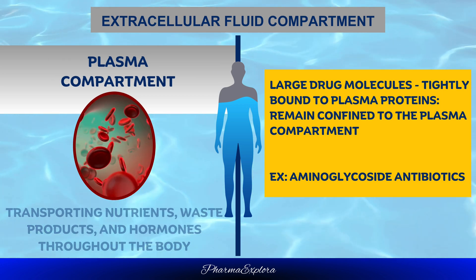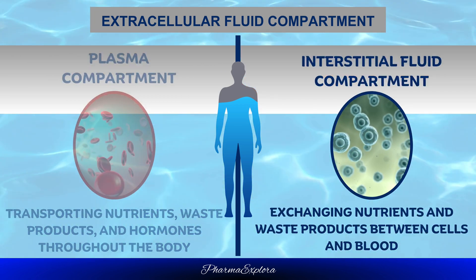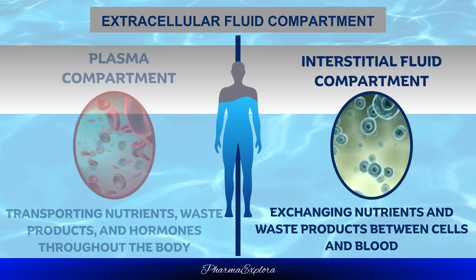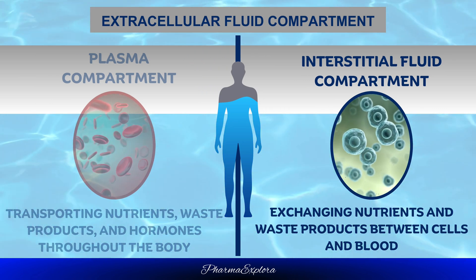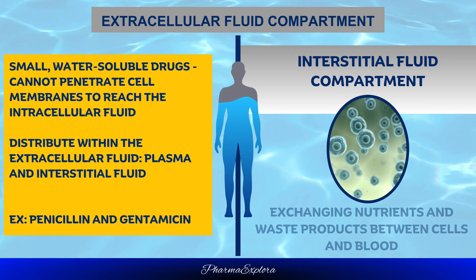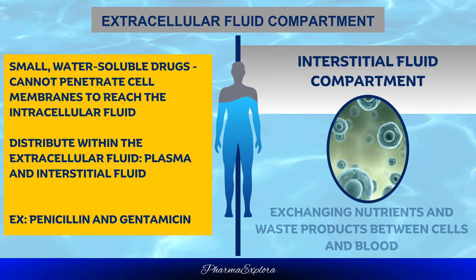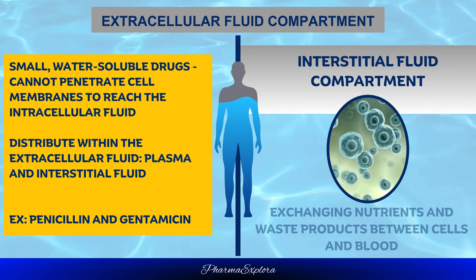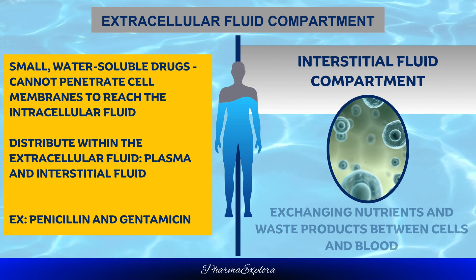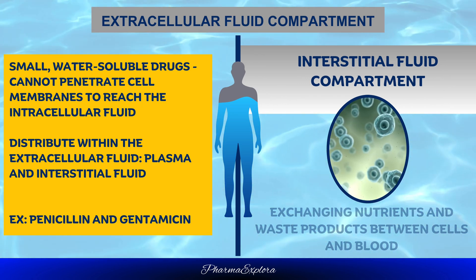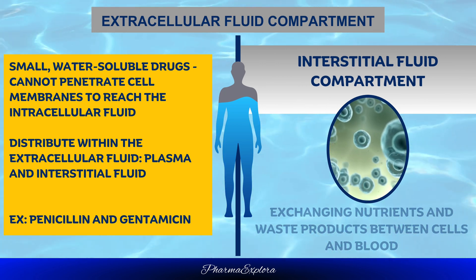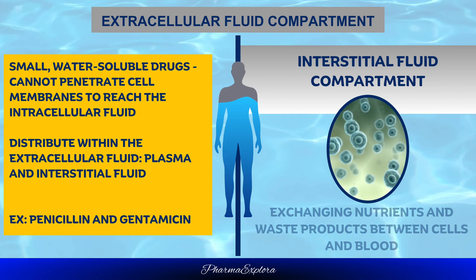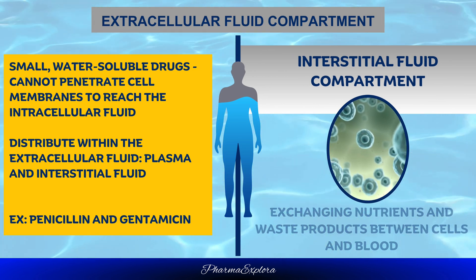Aminoglycoside antibiotics are examples of drugs with this distribution pattern. The interstitial fluid compartment is the fluid that surrounds cells and tissues, composed of water, electrolytes, and some proteins, responsible for exchanging nutrients and waste products between cells and blood. Small, water-soluble drugs can pass through the tiny gaps between capillary cells into the interstitial fluid; however, due to their hydrophilic nature, they cannot penetrate cell membranes to reach intracellular fluid. These drugs distribute within the extracellular fluid — about 20% of body weight, or approximately 14 liters — as seen with drugs like penicillin and gentamicin.